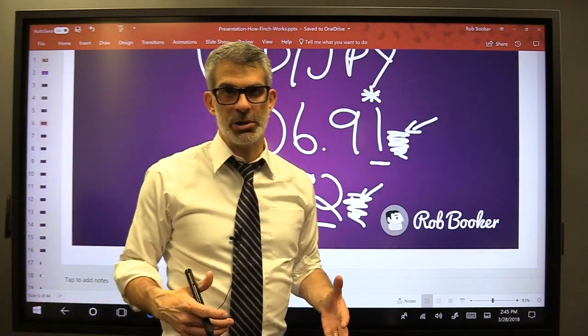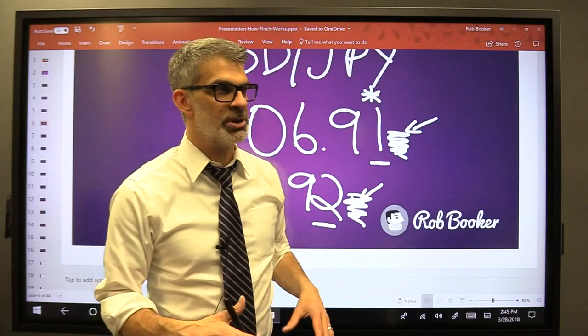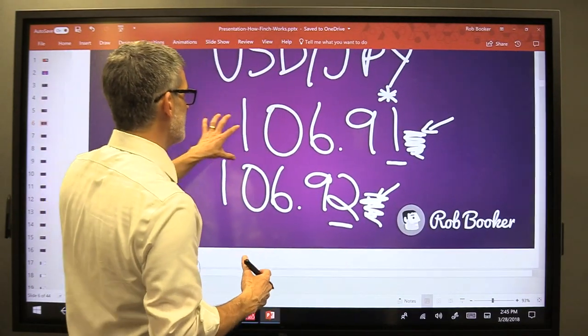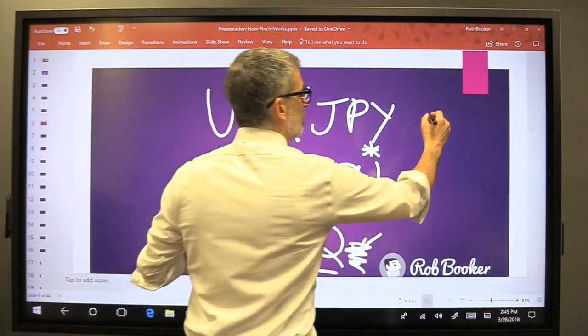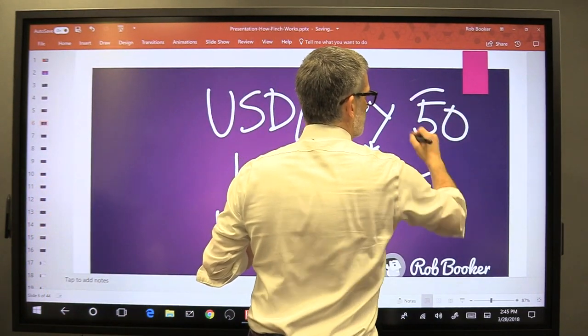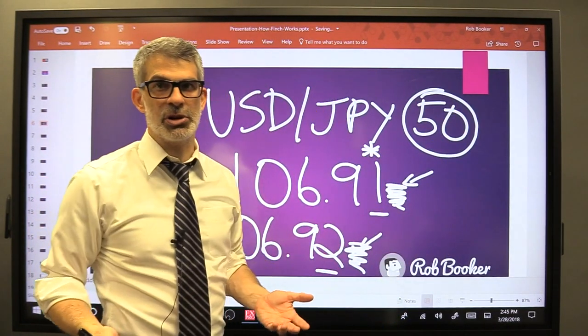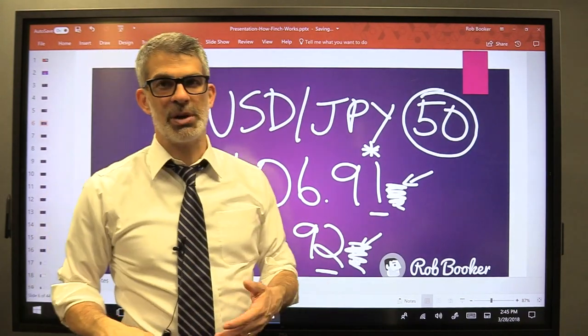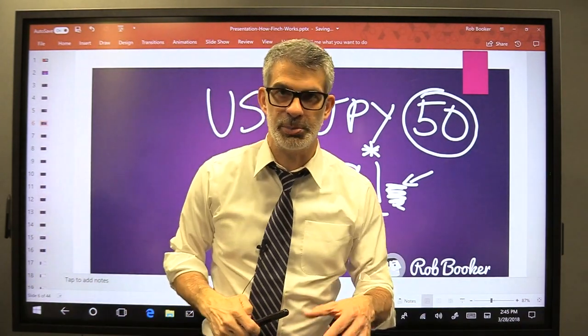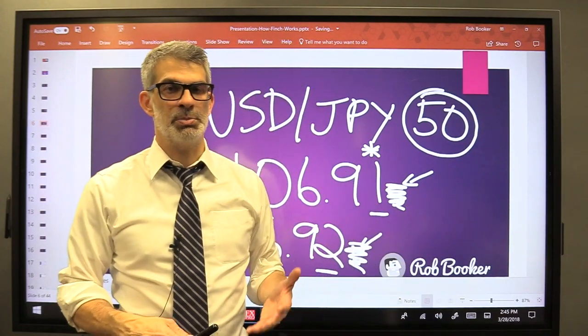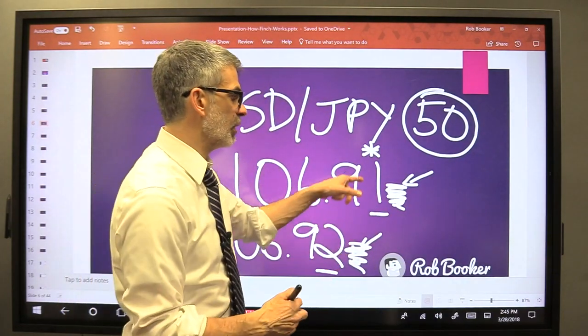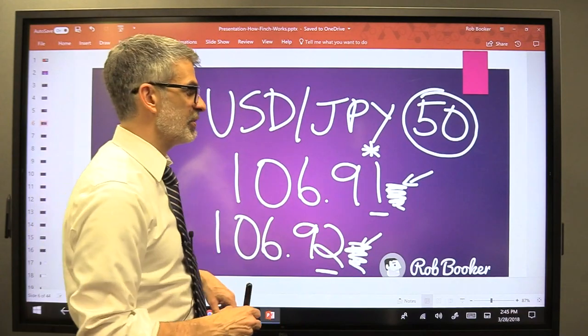But you want to be able to talk in terms of pips. You want to be able to use this terminology. You're going to hear people say things like, the US dollar Japanese yen moved 50 pips today. Or you're going to see people talk about the average daily range for the British pound US dollar is 100 pips. And that means that it's moving 100 of those little numbers that it refers to.